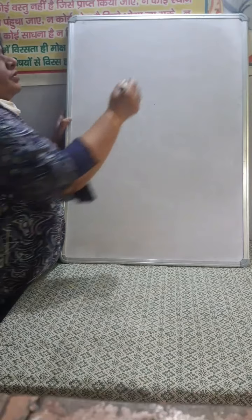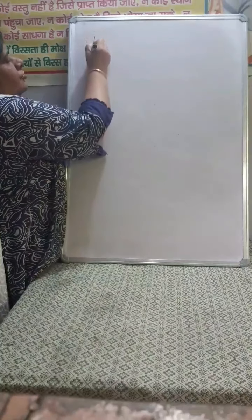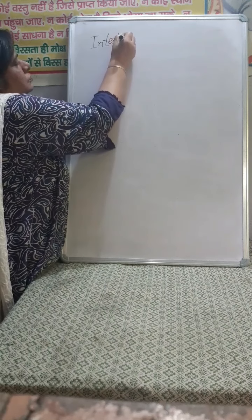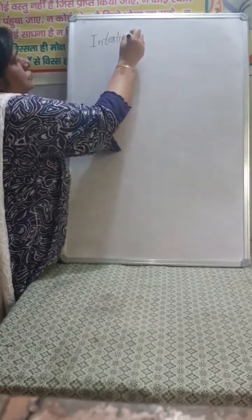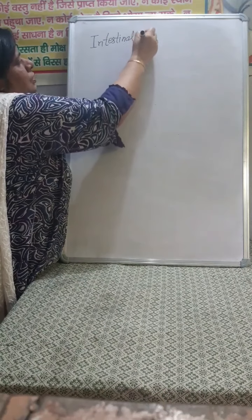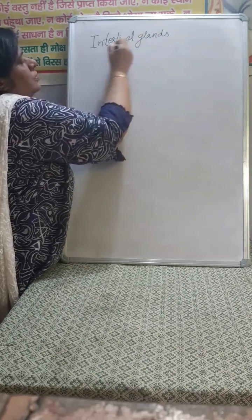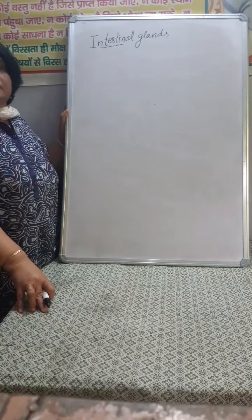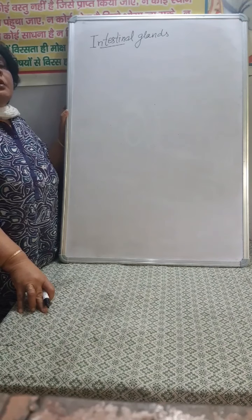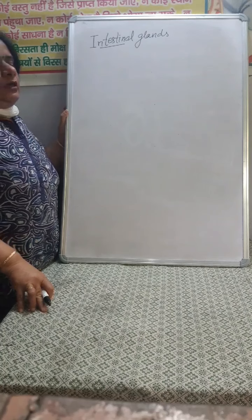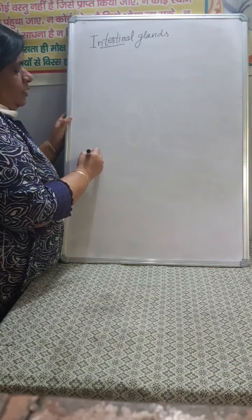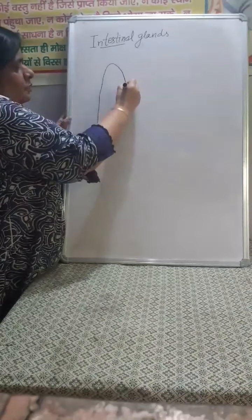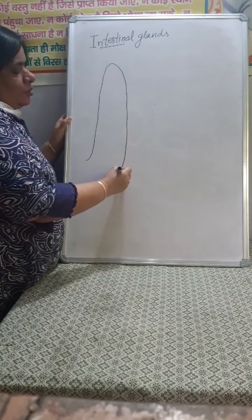Good morning to the students of Plus One class. Our next topic is intestinal glands. Intestinal glands are those which are found in the intestine. In the intestine there are foldings with finger-like processes called villi. I am drawing the diagram of villi here.